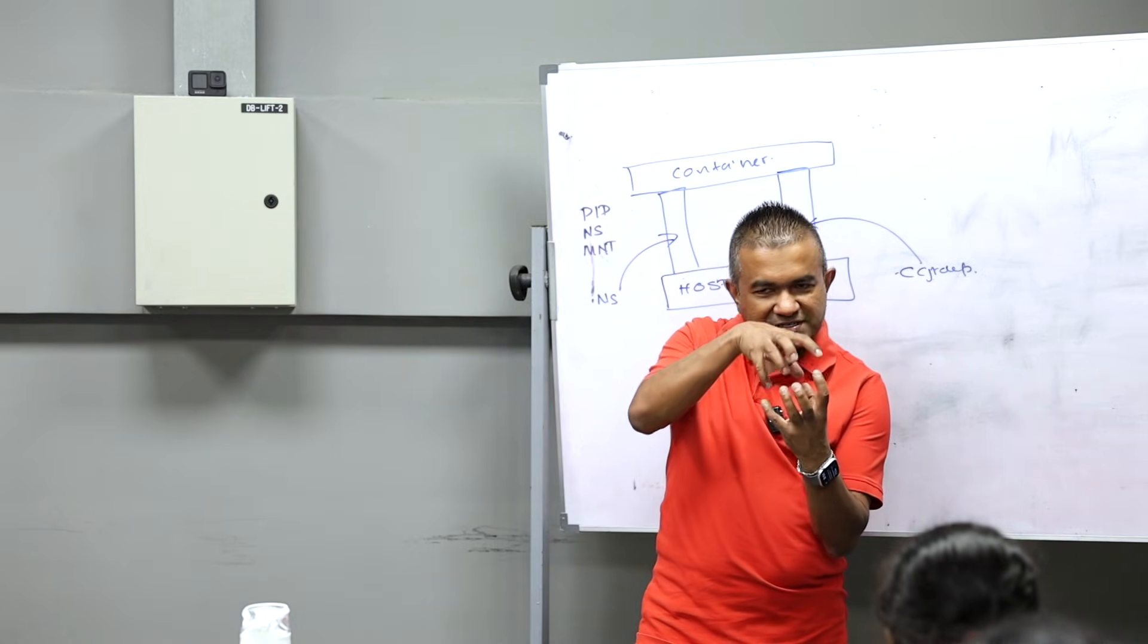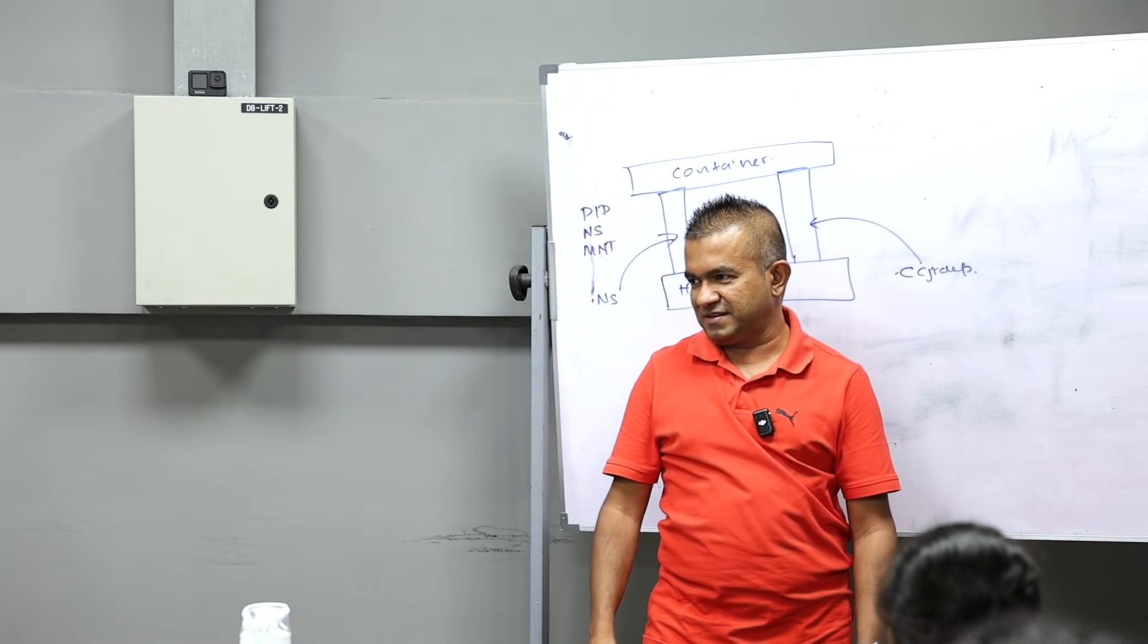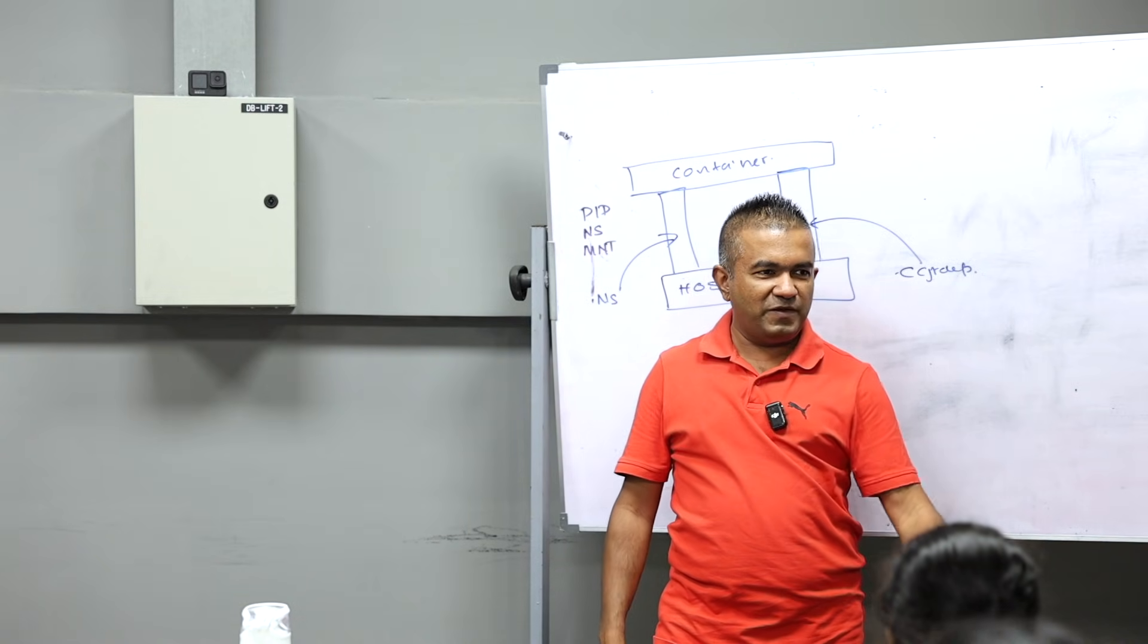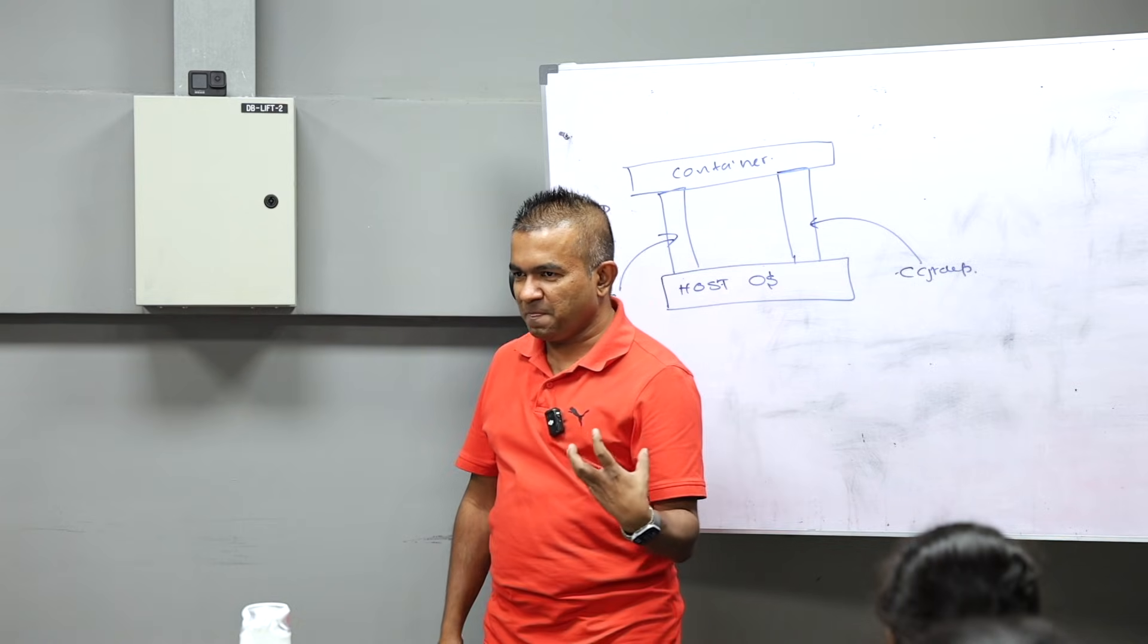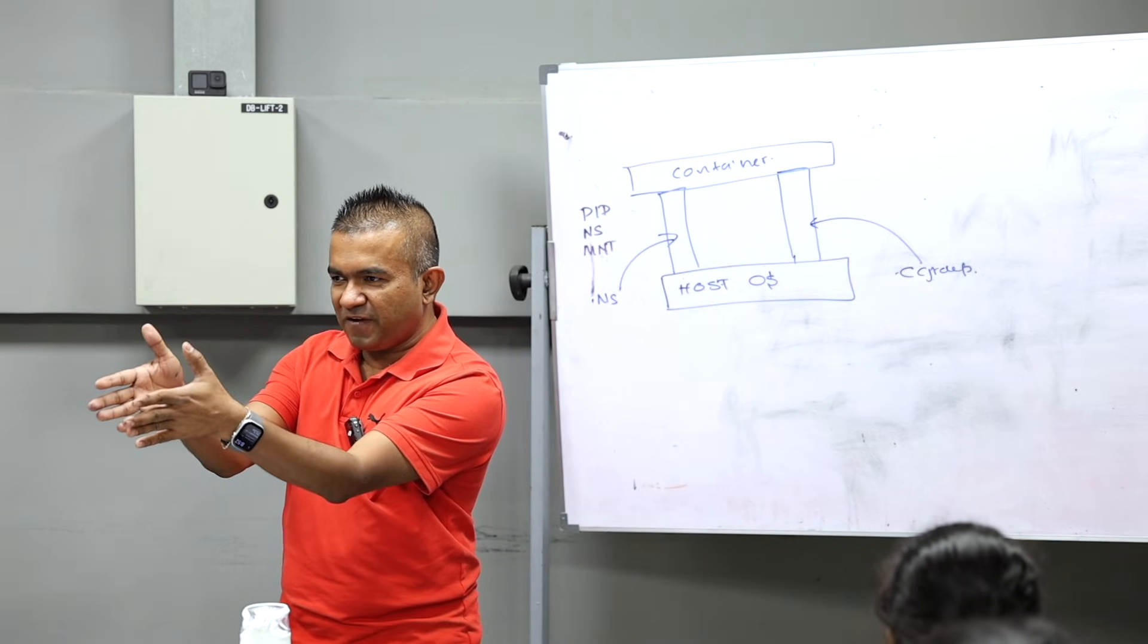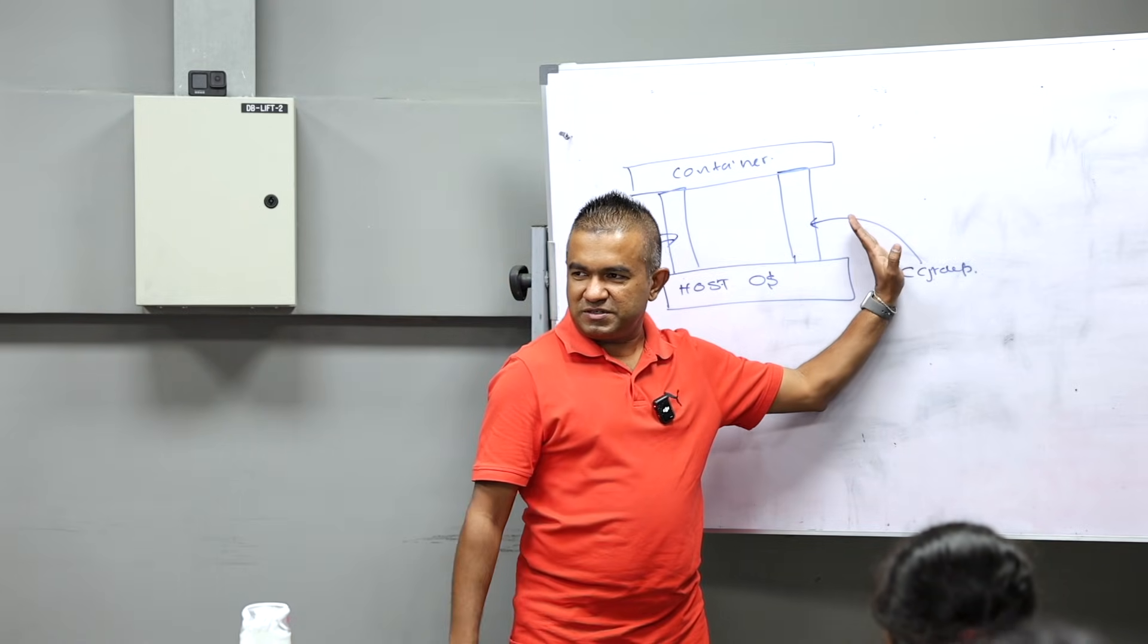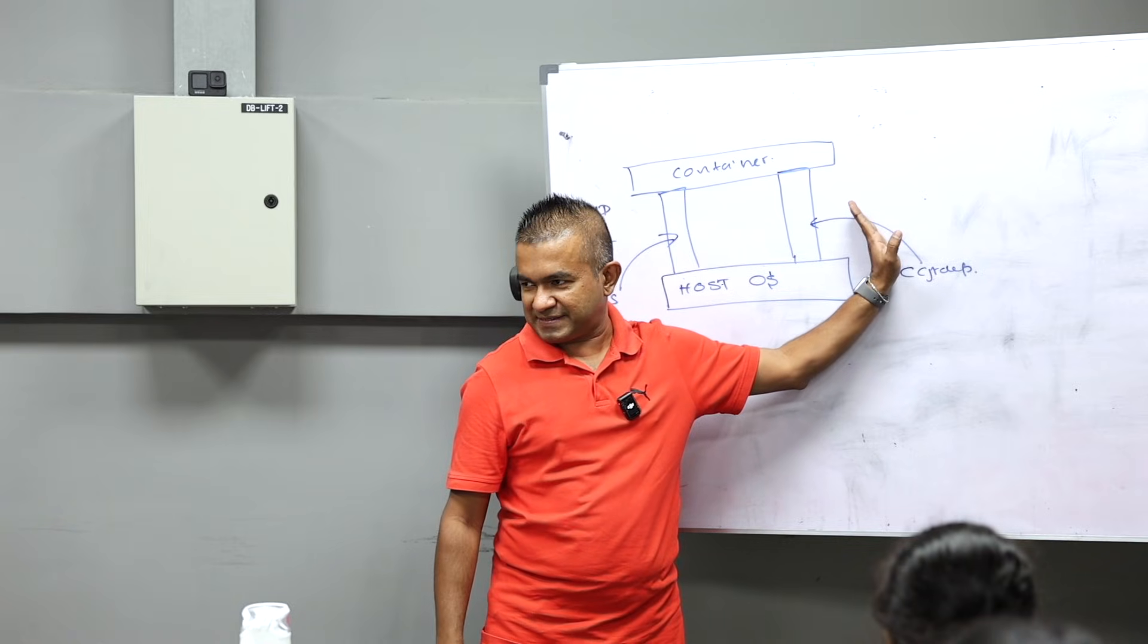Cgroup means it is controlling how much you can access. For example, we have 100% CPU, you can only get 1%, you can get 5%, you can get 10%. Cgroup controls how much you can access.